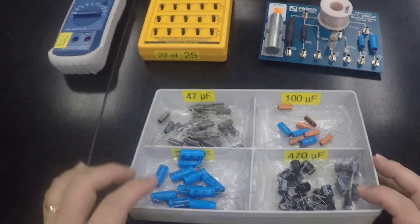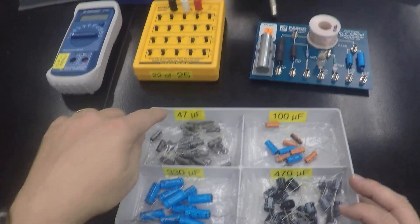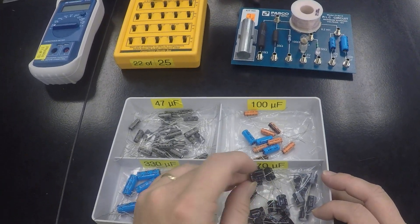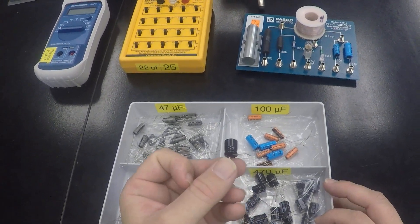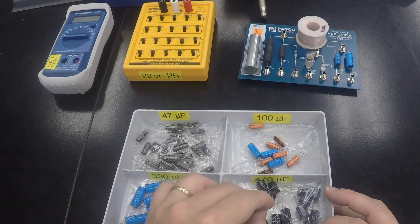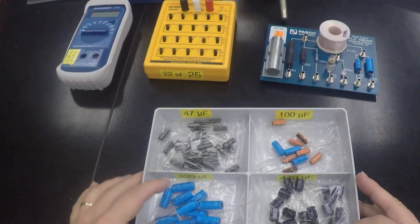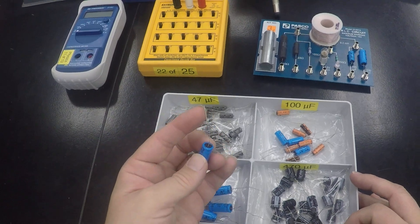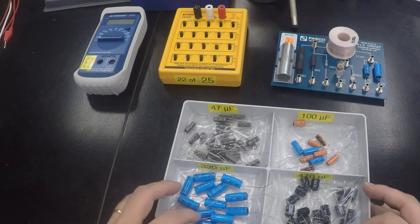So you can see in this bin we have different ones, 47 up to 470. So that means that this one right here can store ten times as much charge per volt as the 47 microfarads. We'll be dealing with those, and so that means we'll need the gator clips once again to connect them up in circuits.